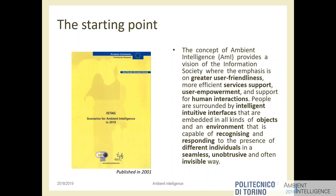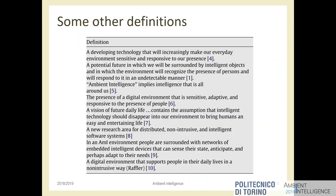The environment would be capable of recognizing and responding to the presence of different individuals — so if different people enter a room, a car, a house, or a school, the environment could react differently. Today I'm not aware of basically any application that does this. It would work in a seamless, unobtrusive, and often invisible way. These are reasonable scenarios with technology already available, yet we are not seeing it applied.